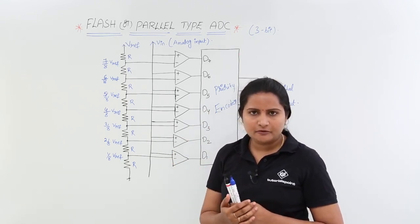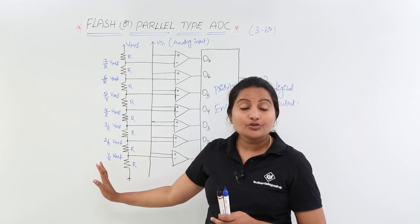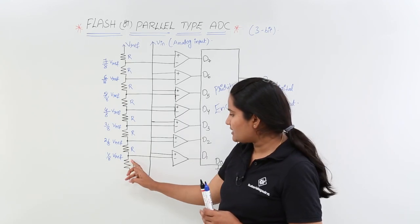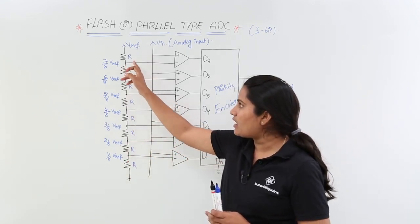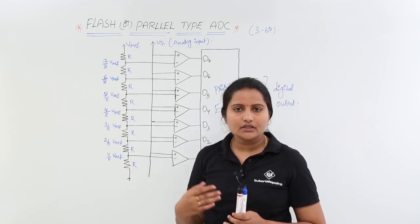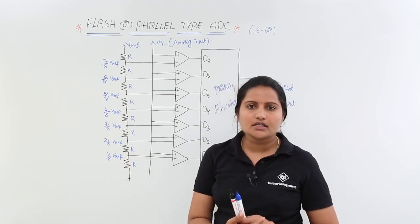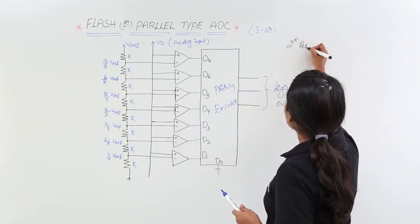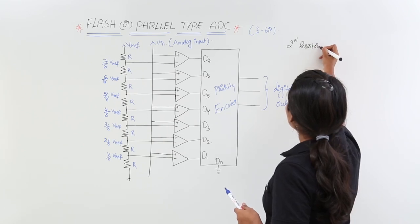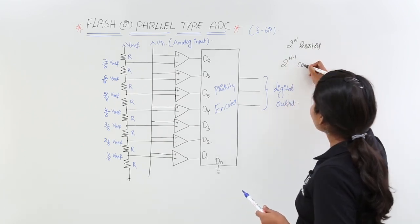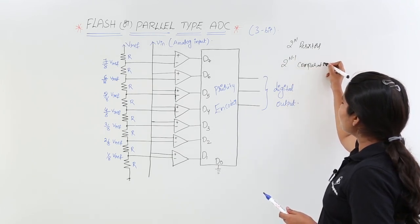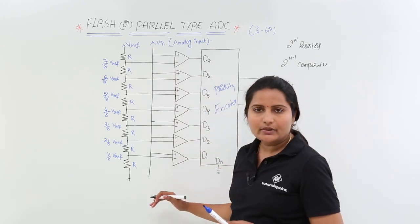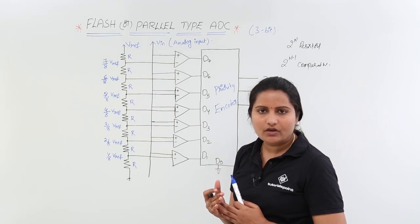For 3-bit output, you need 2^n resistors — that means 2³ = 8 resistors. You can observe 8 resistors here, all with the same value. You also require 2^n minus 1 comparators, which are op-amps. Here you can observe 7 op-amps, since 2³ minus 1 equals 7.